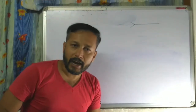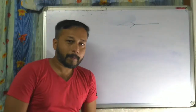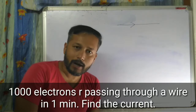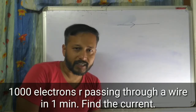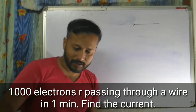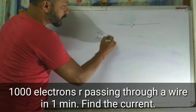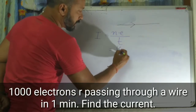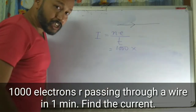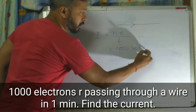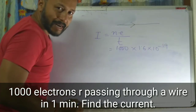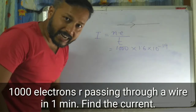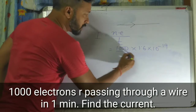Let us solve a numerical based on this formula. Read the question: 1000 electrons are passing through a wire in 1 minute. Find the amount of current. So, I equals NE by T. N is 1000. E is 1.6 into 10 to the power minus 19. Time is 1 minute. Since time is given in minutes, we have to convert it into seconds: 1 minute means 60 seconds.